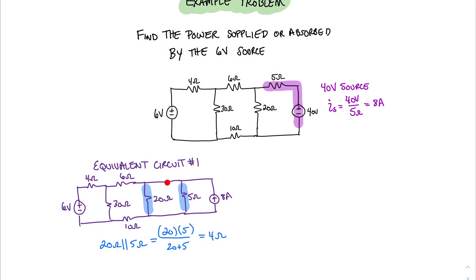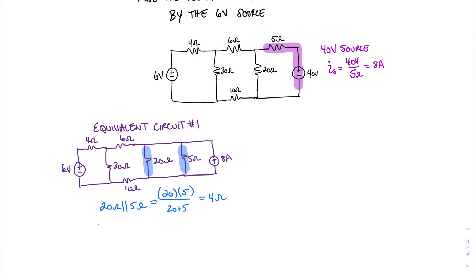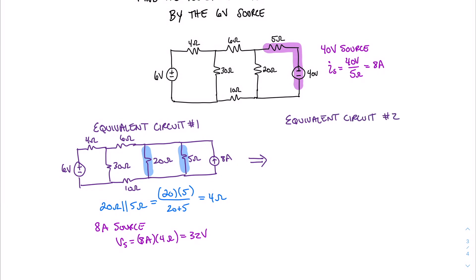That 4-ohm resistance is now a single resistance in parallel with the 8-amp source. We can once again do a source transformation with that 4-ohm parallel resistance and this 8-amp source into a voltage source with a series resistance. For the 8-amp source, the equivalent voltage V sub s equals 8 amps times 4 ohms, which equals 32 volts. Now we can draw our second equivalent circuit: our 6-volt source, our 4-ohm resistor, our 30-ohm resistor, our 6-ohm resistor, and now our 4-ohm resistor and 32-volt source, with our 10-ohm resistor at the bottom.